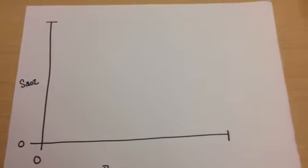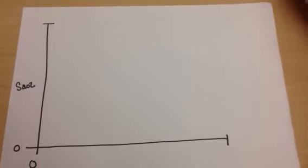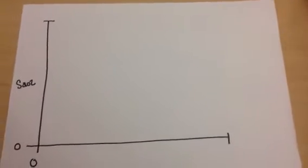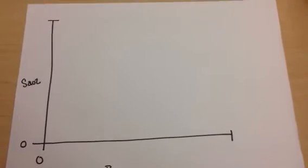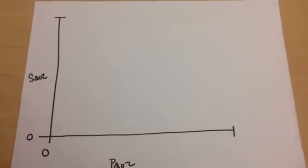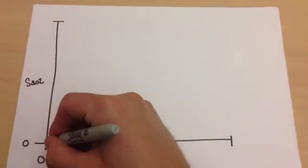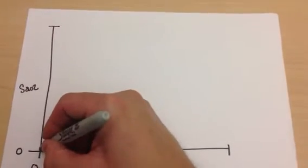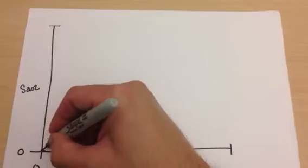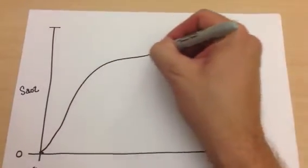And this may seem kind of counterintuitive, and so what I'm going to do is use the oxyhemoglobin dissociation curve to describe what's going on. So if you look at the oxyhemoglobin dissociation curve, it will generally look something like this.